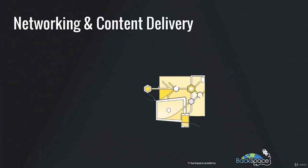Now let's have a look at the networking and content delivery services. Amazon CloudFront is a global content delivery network, or CDN, that securely delivers your frequently requested content to over 100 edge locations across the globe. By doing this, it achieves low latency and high transfer speeds for end users. It also provides protection against DDoS attacks.